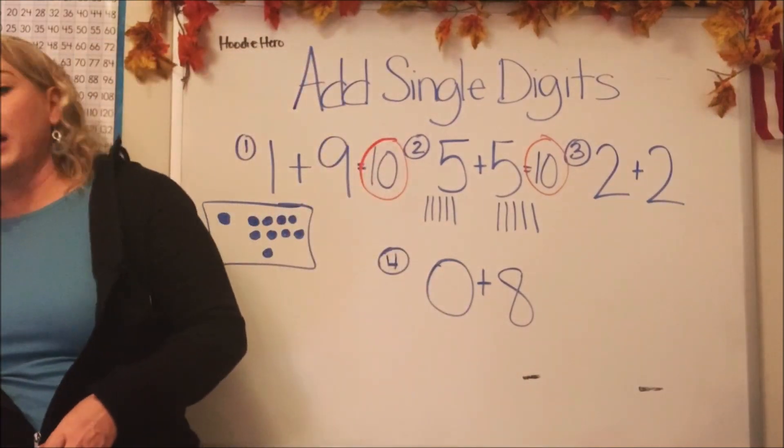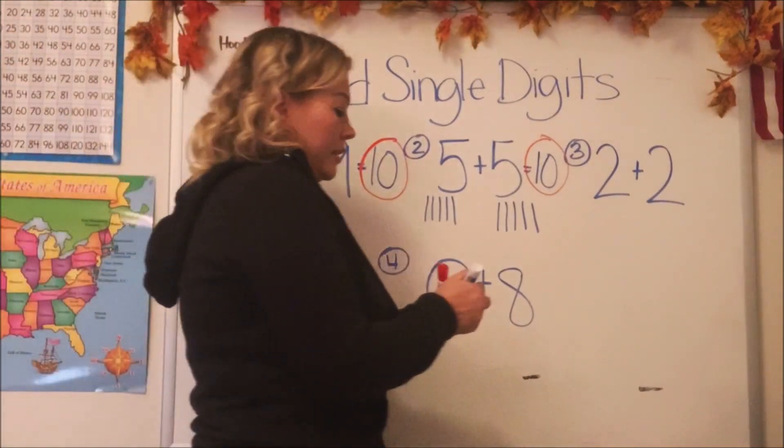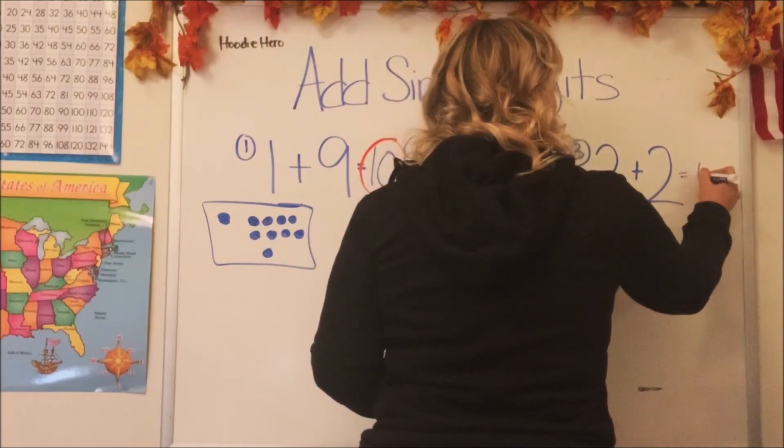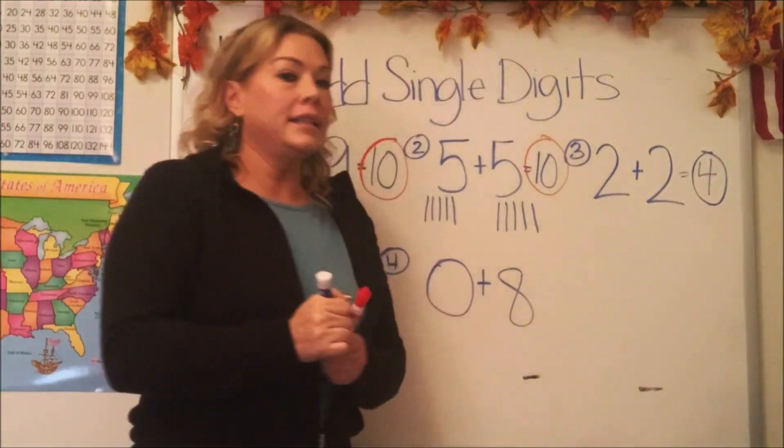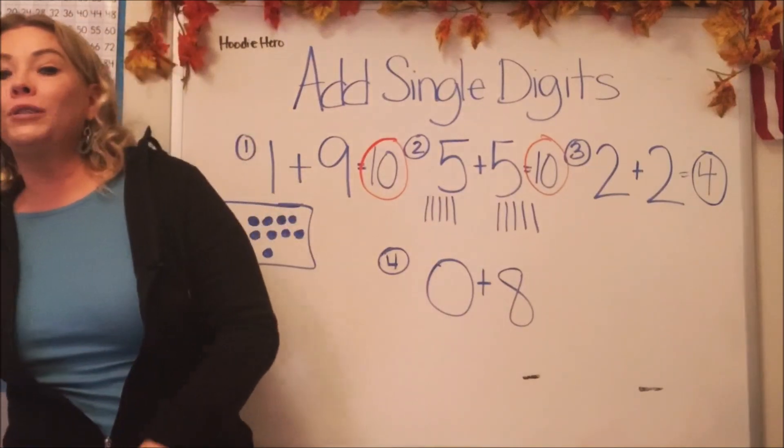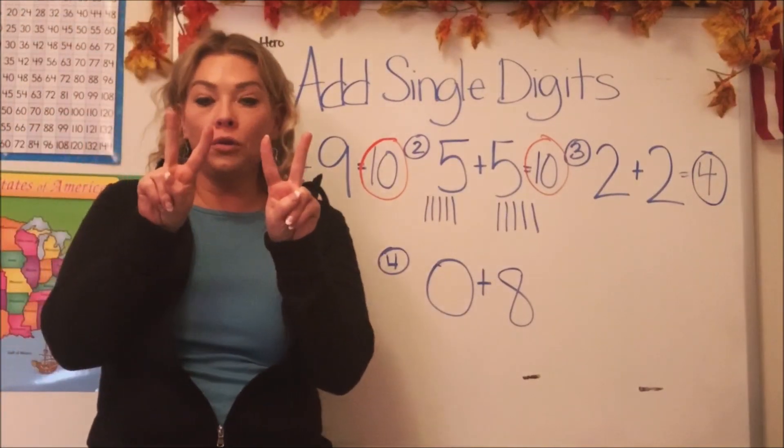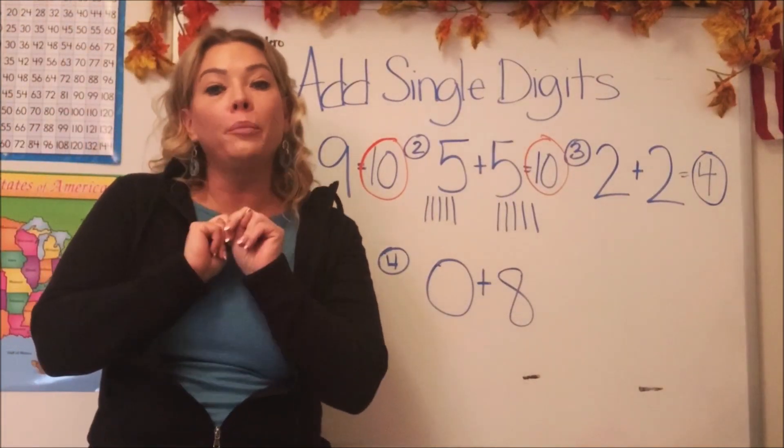Let's go ahead and write down that answer. See, we could have used anything around the room to visualize it. And again, we could have used our fingers two and two and counted them, which would have been four.